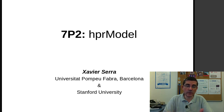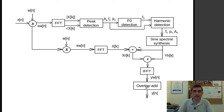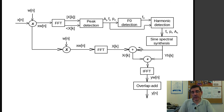We're going to do it through the HPR model, the implementation within the SMS tools package. We're going to be talking about this block diagram, in which from the input sound and all the analyses already discussed — computing the spectrum, detection of peaks, detection of the fundamental frequency and identification of the harmonics — we then synthesize these harmonics in the spectral domain, synthesizing the lobes of the harmonics. Now we focus on how these sinusoids can be subtracted from the original signal.